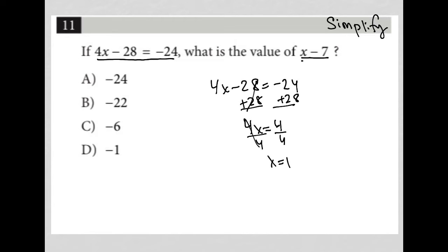The question asks for the value of x minus 7. So x minus 7 is equal to 1 minus 7, which is equal to negative 6. And therefore, the correct answer is choice C.